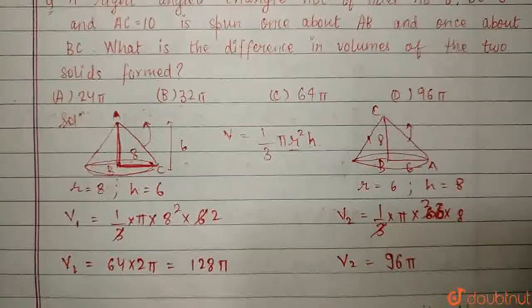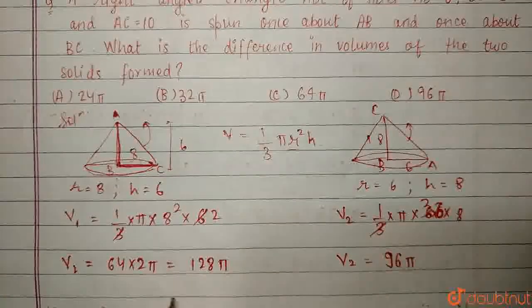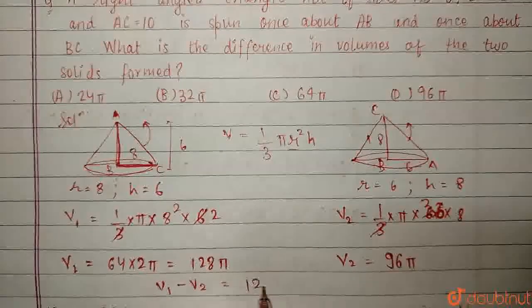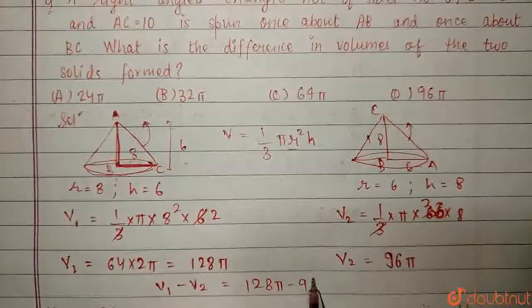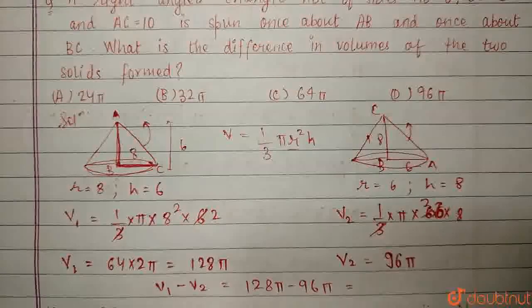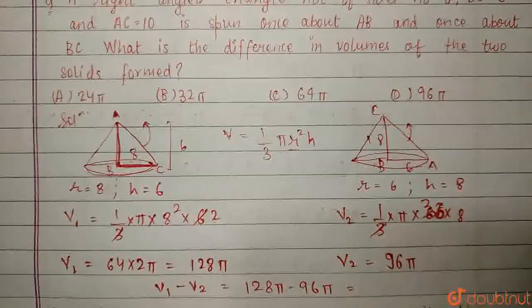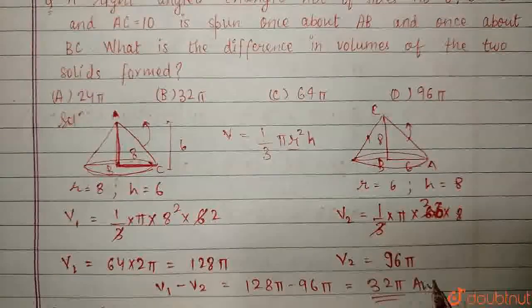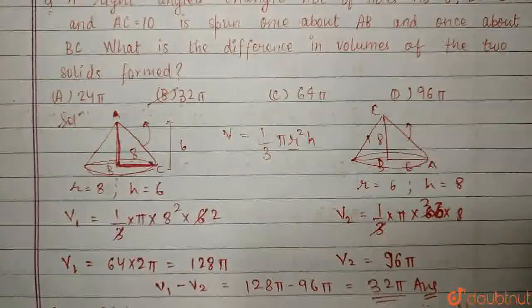I have to find the difference in the volume, so difference in the volume would be v1 minus v2, which is equal to 128 pi minus 96 pi, which gives me the difference is 32 pi, which is our answer given as B in the question. Thank you.